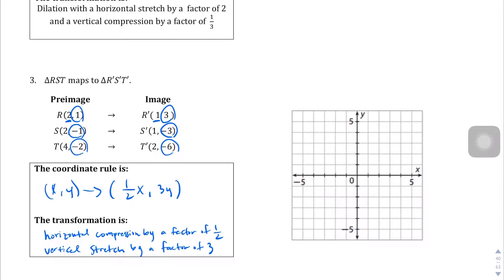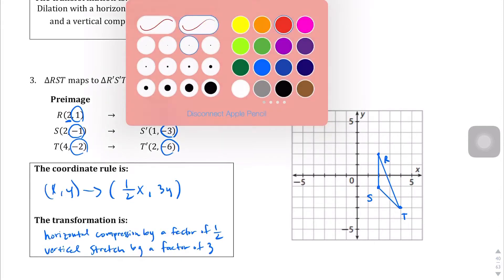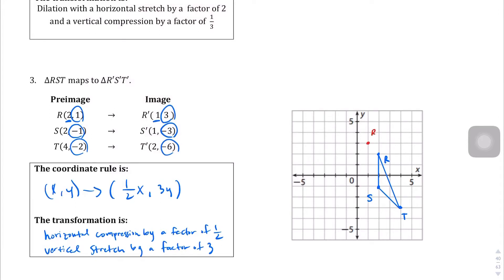Let's go ahead and do the pre-image and image here. 2 comma 1 is right here — there's my R. 2 comma negative 1 is my S. 4 comma negative 2 right there — this is my T. Now let's change colors for the new image. 1 comma 3 is right here — there's my R prime. 1 comma negative 3 is right here — there's my S prime. And 2 comma negative 6 is right here — here's my T prime.